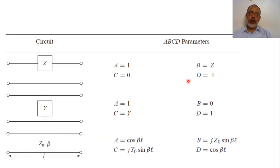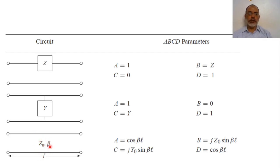In a similar way, one can derive ABCD matrices for different networks. For a shunt admittance Y, the ABCD matrix is: A = 1, B = 0, C = Y, D = 1. For a transmission line section of length L with propagation constant β and characteristic impedance Z₀, the ABCD matrix is: A = cos(βL), B = jZ₀ sin(βL), C = jY₀ sin(βL), D = cos(βL).